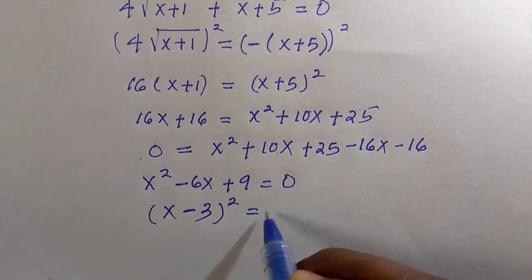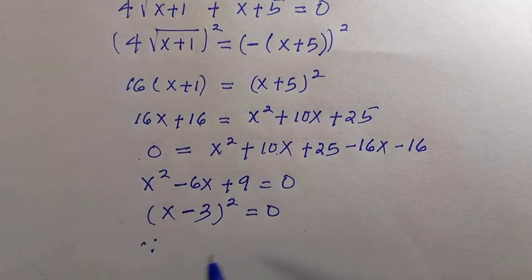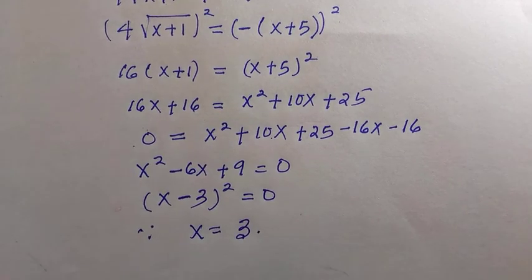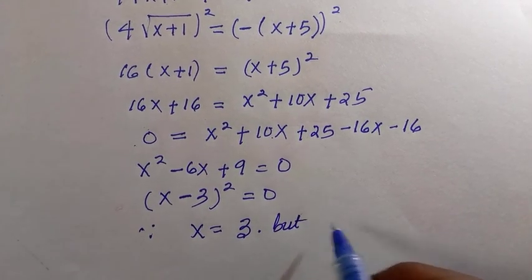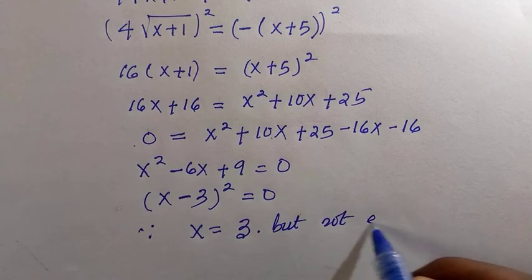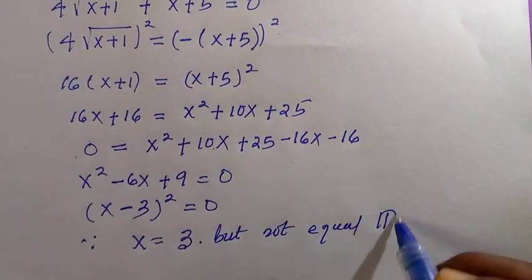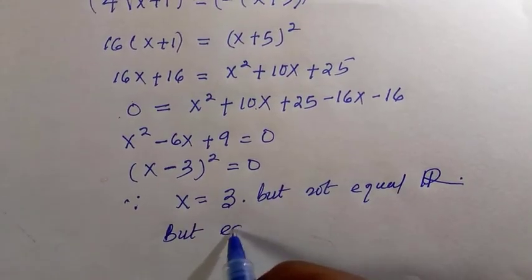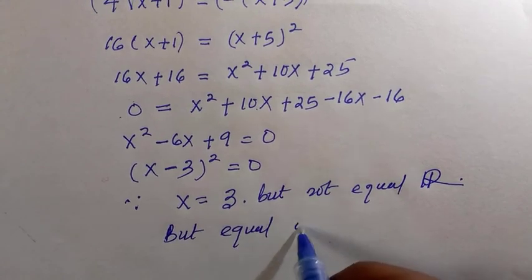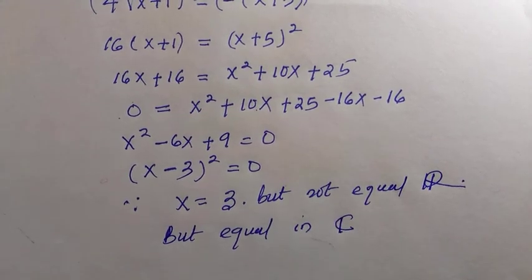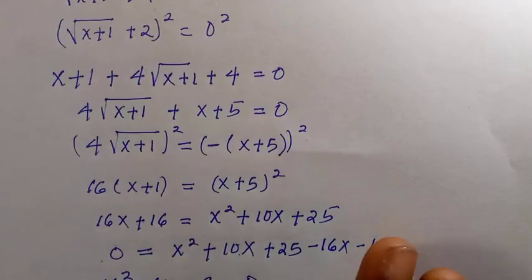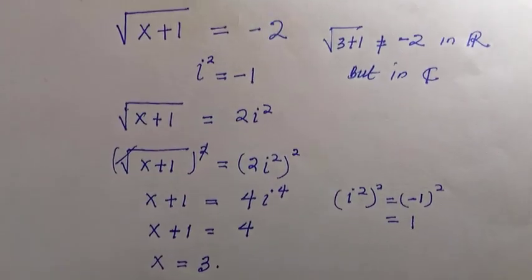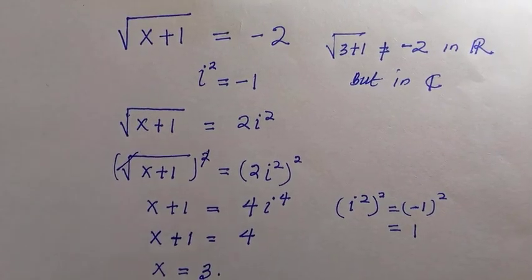Then we can conclude that this equals 3. So automatically the left-hand side equals the left-hand side here, but this is not equal in real space, but it is equal in complex. These are two ways to solve this, and some might say the equation does not exist, but this is the satisfying value of it, which is x equals 3. Thanks for watching and please subscribe to this channel. See you in the next class.